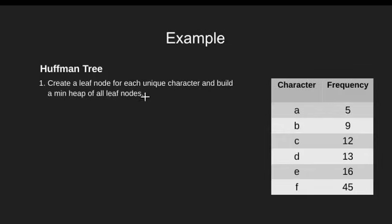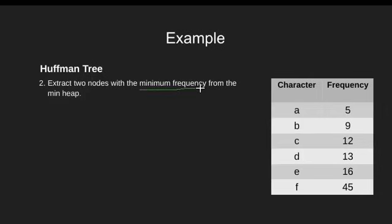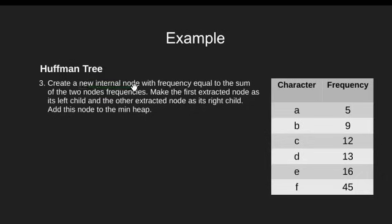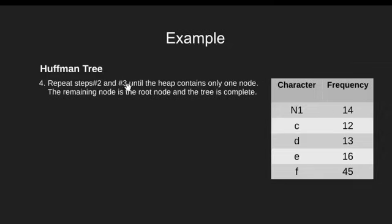The first step says to build a min heap for each unique character. This heap would be based on frequencies of the input characters such that each node's data is less than or equal to the data in the node's children. Once we have the min heap, we need to extract two nodes with minimum frequencies. This step is greedy in nature. Here we have character A and B with the least frequencies. In the next step, we form a new internal node with frequency equal to the sum of the two nodes' frequencies. The first extracted node forms its left child and the second extracted node becomes the right child. After node formation, we add this new internal node to our min heap. In the last step, we perform steps 2 and 3 until only a single node remains in our heap.